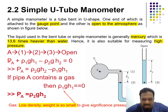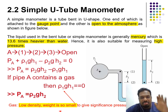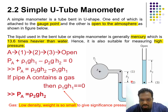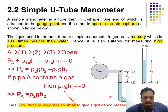For the U-tube manometer: at point A the pressure is PA, and from 1 to 2 the pressure contribution is rho1·g·H1. Points 2 and 3 are at the same height so they have the same pressure. The rule is: whatever goes down, you add; whatever goes up, you subtract. So from 1 to 2 going down, you add; from 3 to open going up, you subtract. If the container holds gas, then rho1·g·H1 equals zero because the gas density is very small.